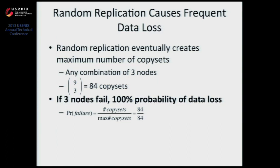Looking at the math: random replication creates copy sets until it eventually creates the maximum number, which is all combinations of three nodes in the cluster. In a cluster of nine nodes, that's 9 choose 3, which is 84. If three random nodes fail at the same time, the probability of losing data is the number of copy sets divided by the overall number of combinations of three nodes — 84 divided by 84, which is 100% probability of data loss.